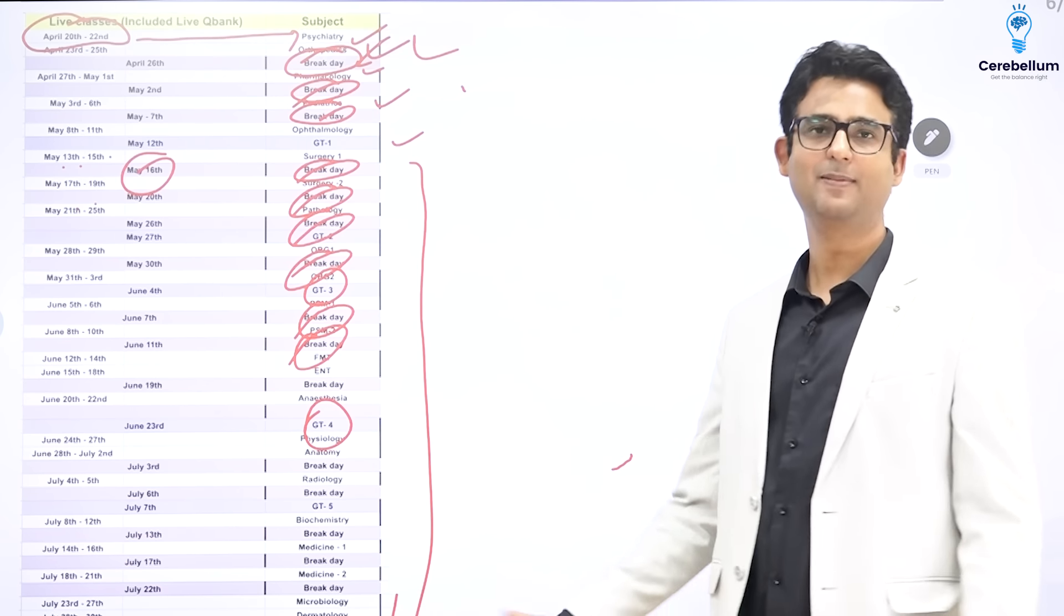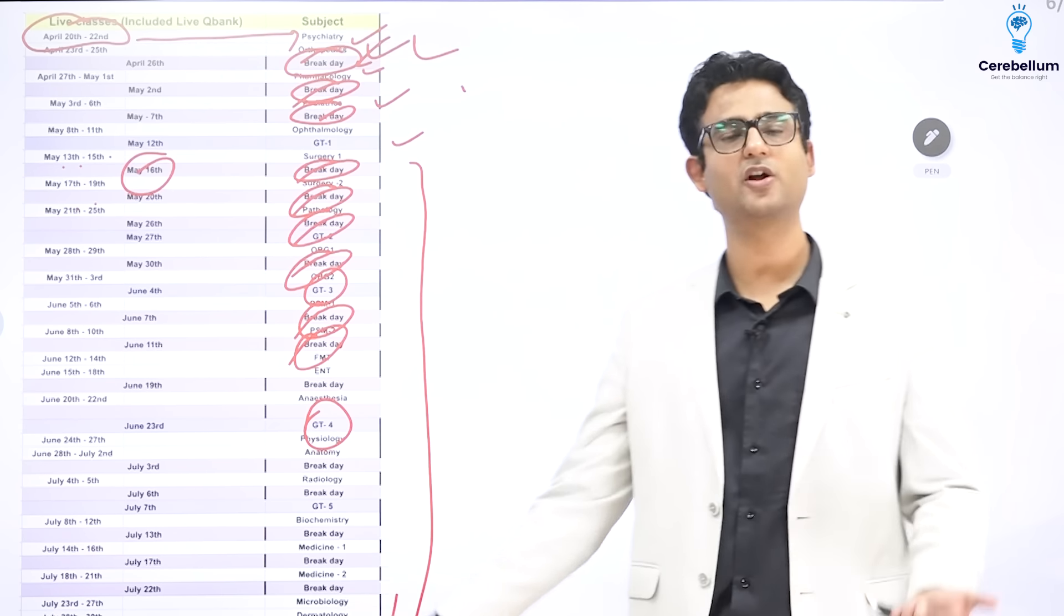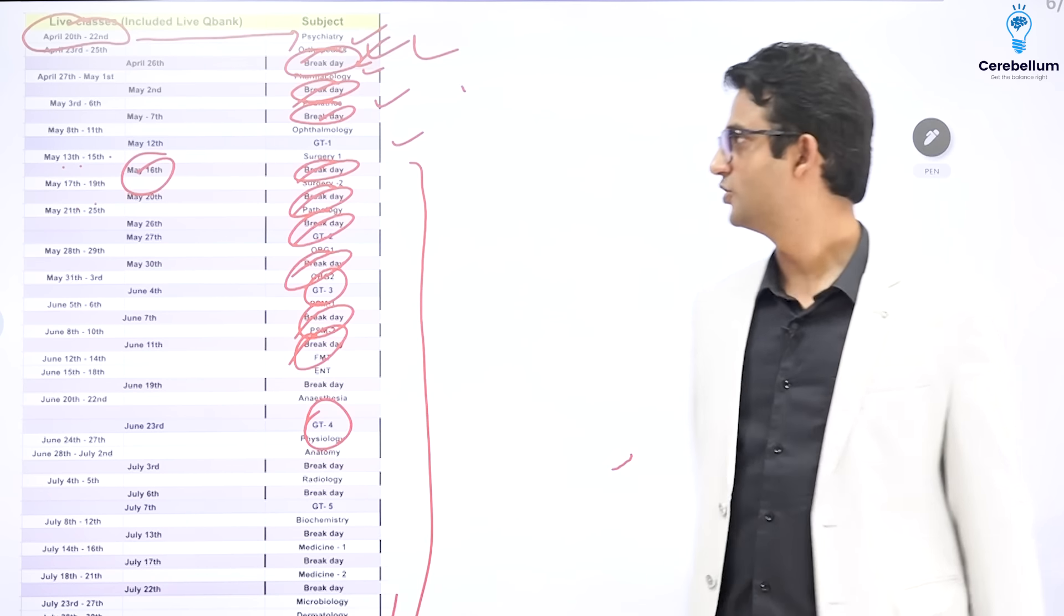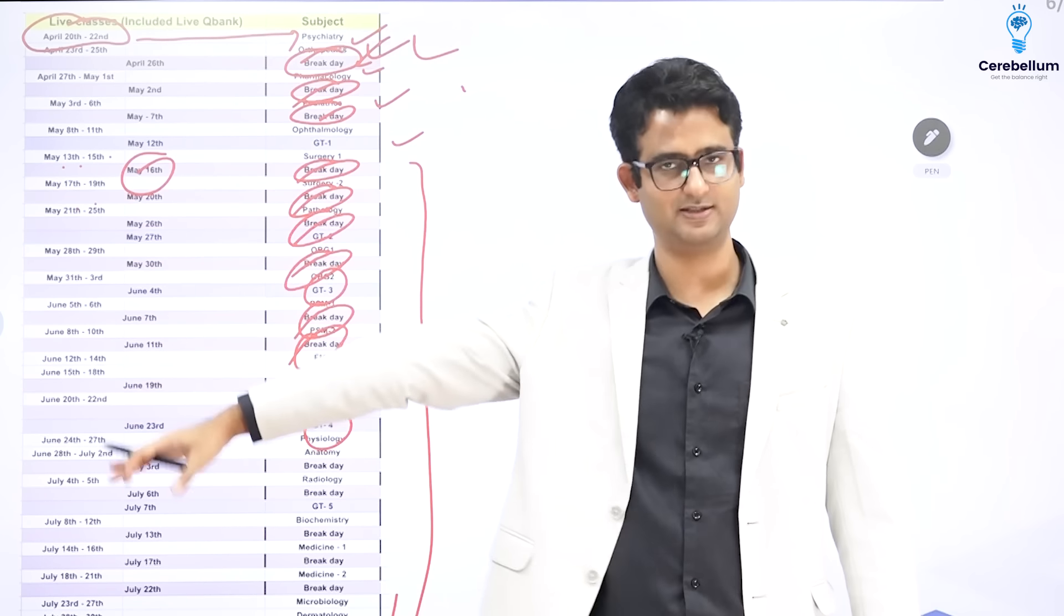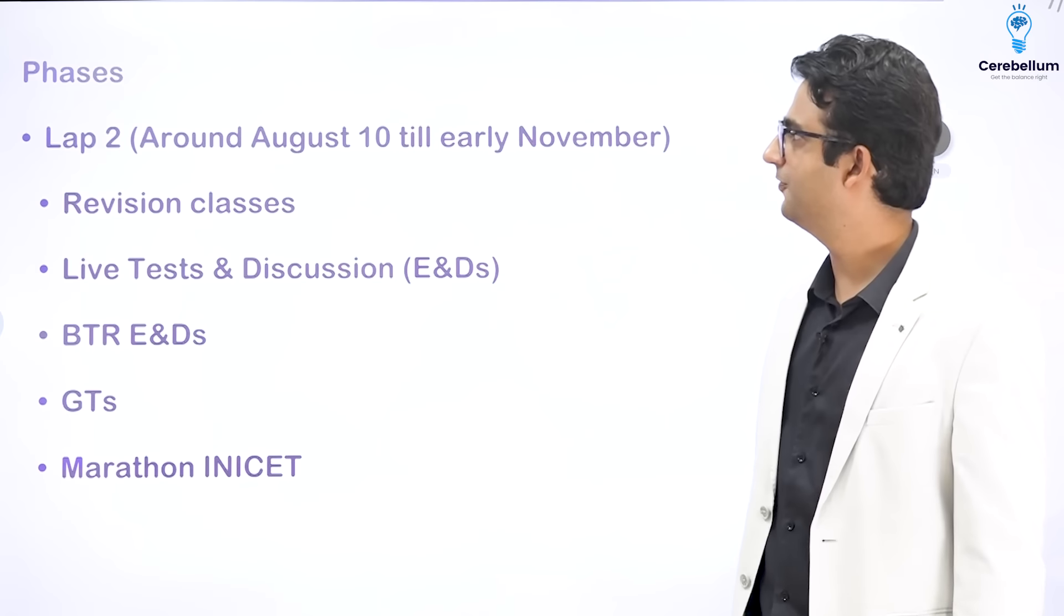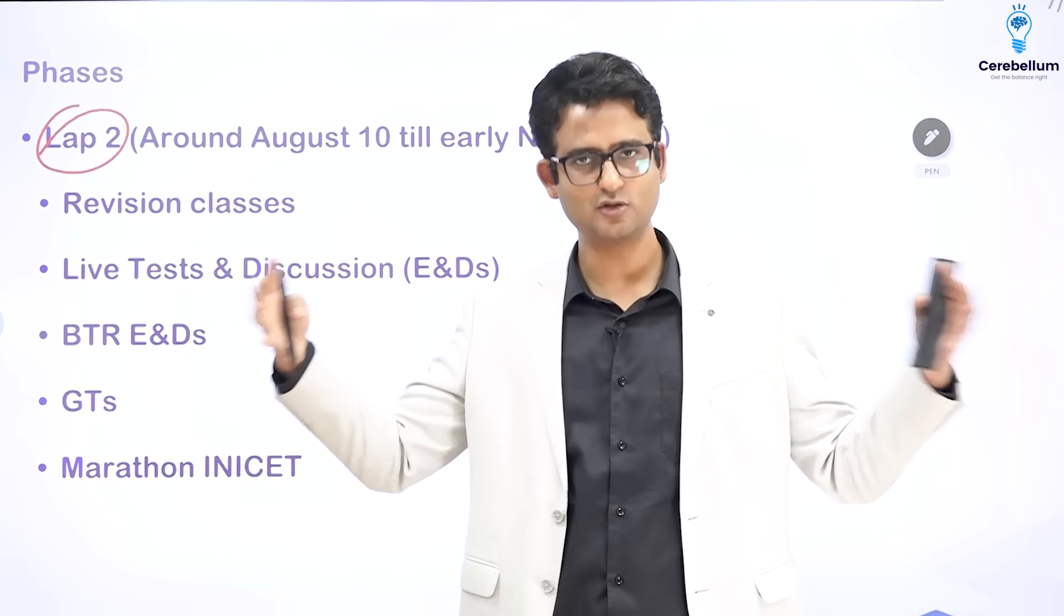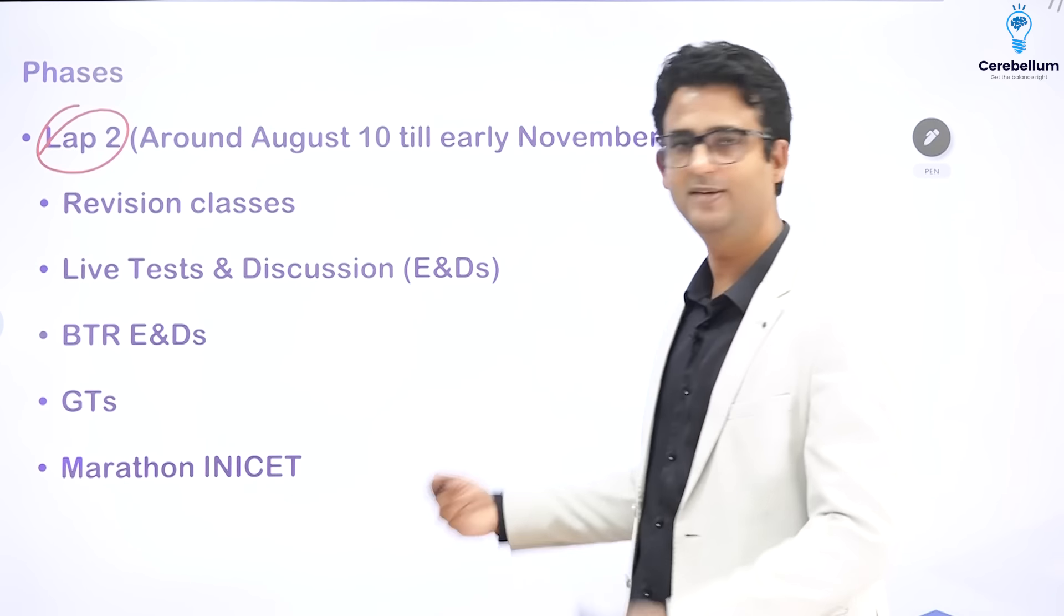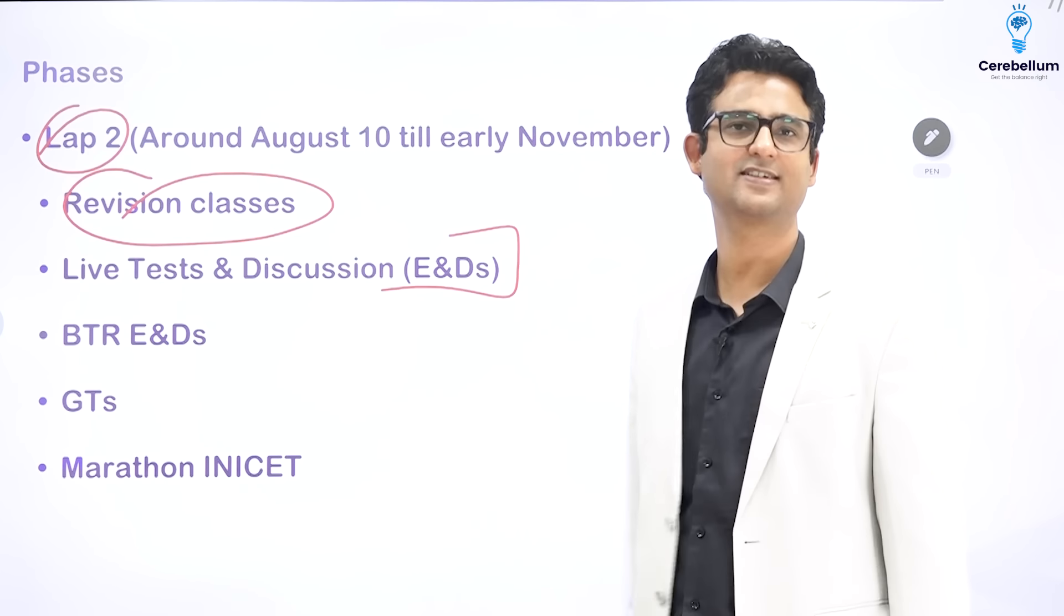Now, NEET PG exam happens on 7th of July. This is what we know. The result gets announced somewhere around 15th or 20th of July. And after that new students join. So that would be NEET PG INICET 2.0 regular batch. So in the phase 2 or the lap 2, now your batch gets coalesced with or merged with the new batch that starts. Again, the same thing will happen in the new batch. There will be revision classes. But now, we start the tests and discussion.